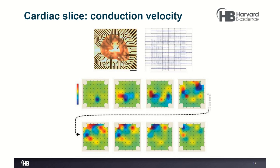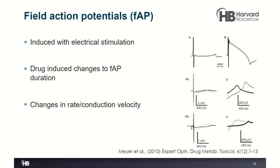Another advantage of MEA technology is the ability to measure field action potentials. From spontaneously beating cardiomyocytes you get the QRS component and T wave, but if you electrically stimulate the cardiomyocytes you get a field action potential. This field action potential can be modulated by compounds, changing its duration, rate, and conduction velocity. This can be done with cardiac slice, cell culture, single-well, or multi-well plate formats, making it ideally suited for screening.